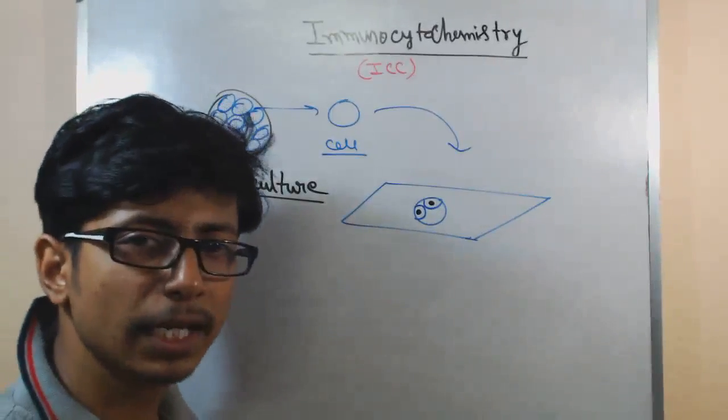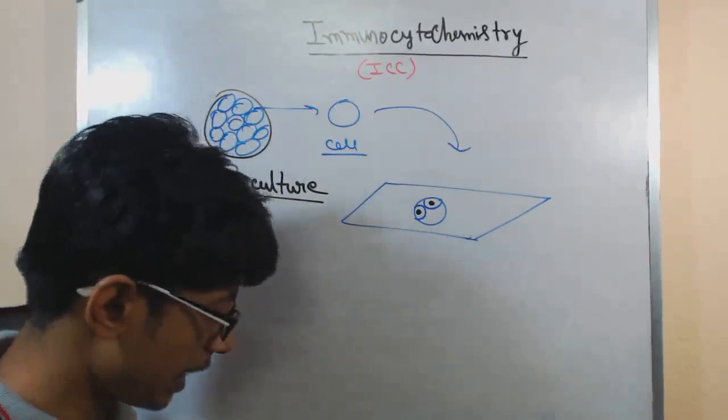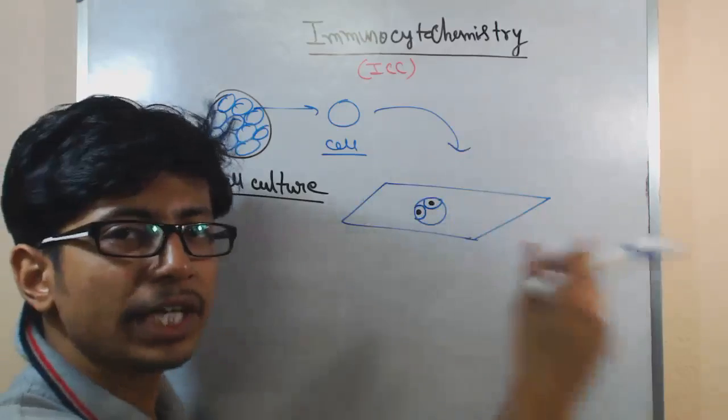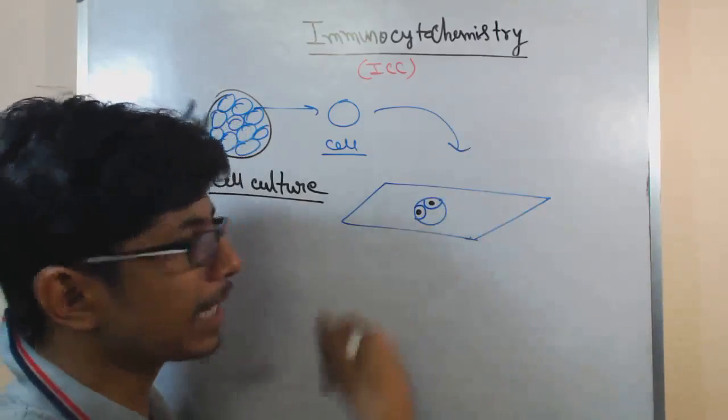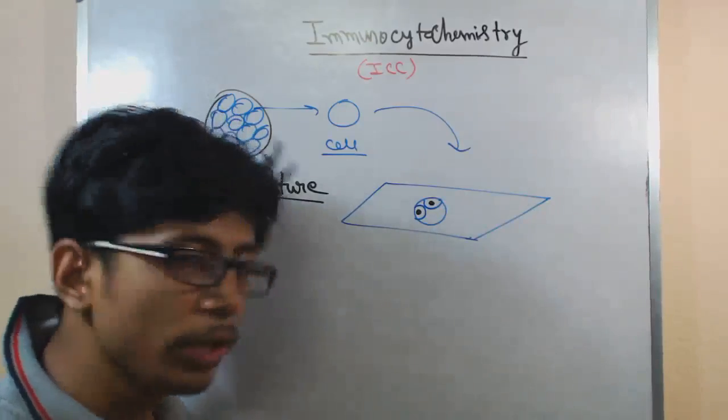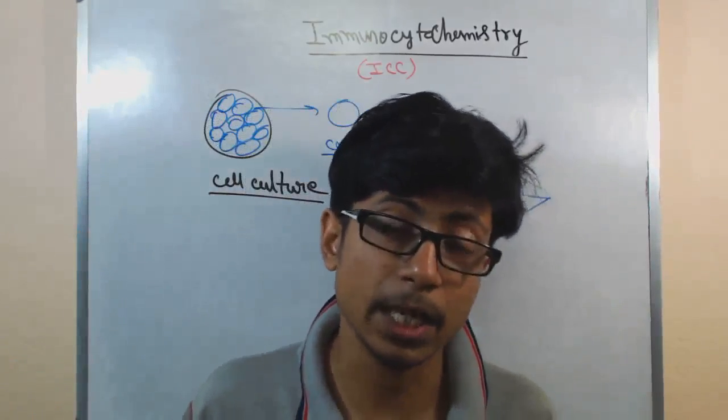We do not know which part of the cell produced that antigen and exactly at what time. So we take this cell from cell culture at different time durations and we want to check to find those antigens whether the antigens are present or not. We know what antigen we are finding.